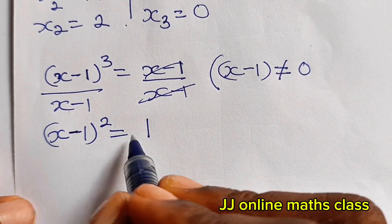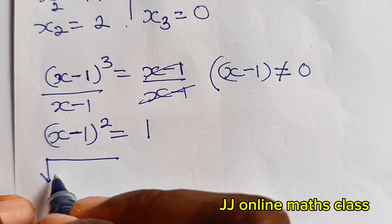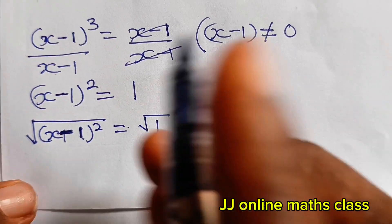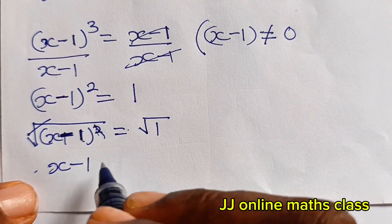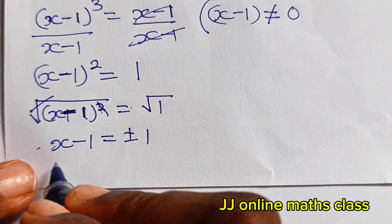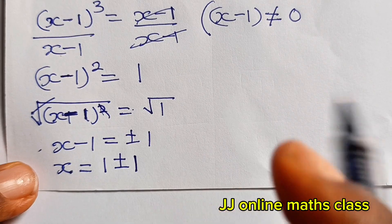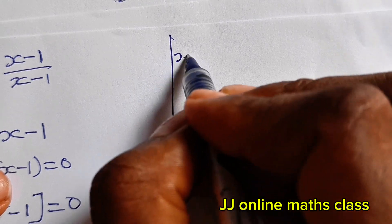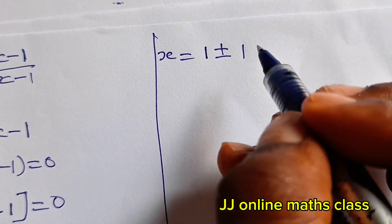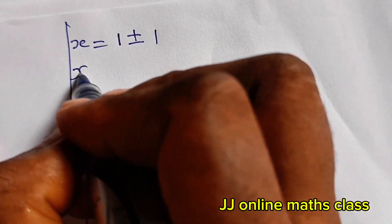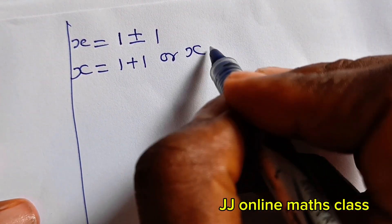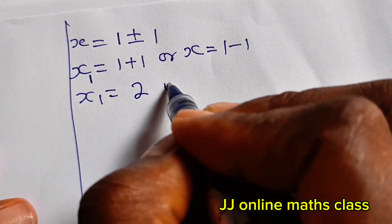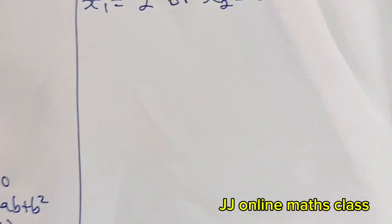Taking the square root of both sides: √[(x-1)²] = √1, so x - 1 = ±1, which means x = 1 ± 1. Therefore x = 1 + 1 = 2 or x = 1 - 1 = 0. Those are two of our solutions.